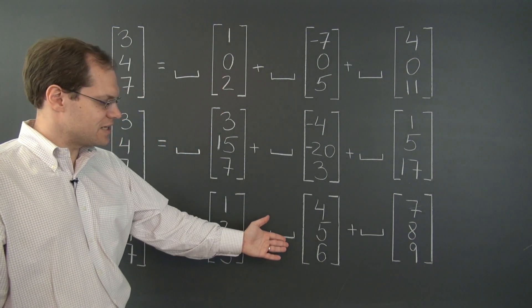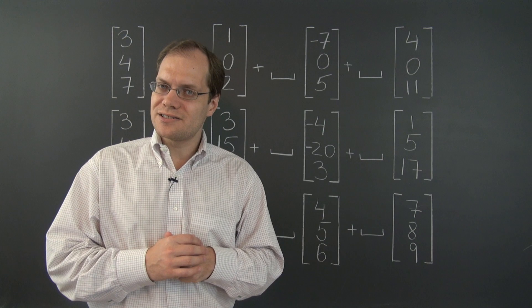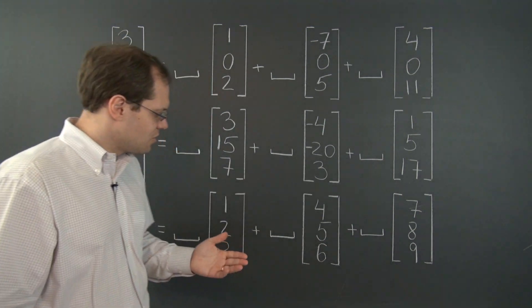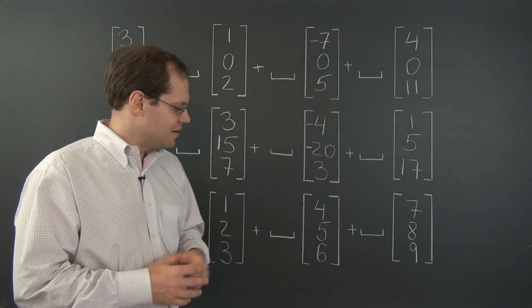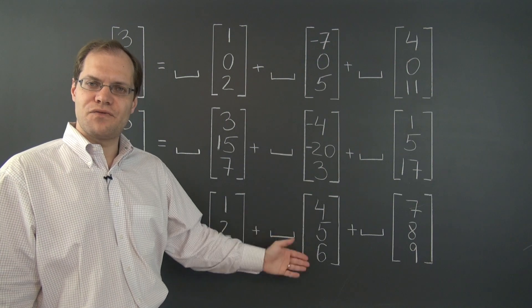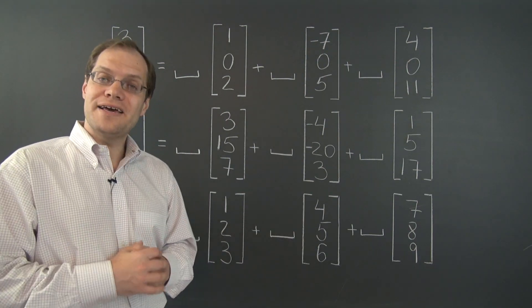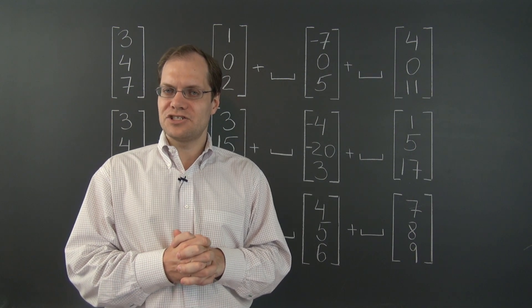What about multiplication by numbers? Well, take any one of these vectors, multiply it by a number and see if the middle entry is still the average of the other two. Let's pick an easy number. Let's multiply this middle one by 10. And we have 40, 50, 60. Is 50 the average of 40 and 60? Yes, it is. So this property also survives multiplication by numbers.